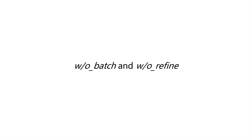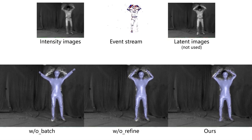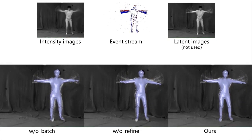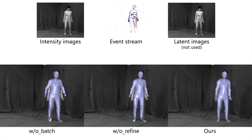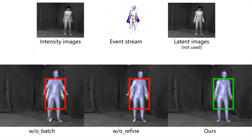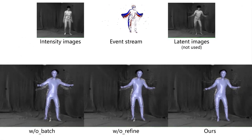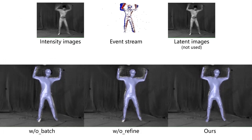In addition, we evaluate each component of our framework. We first evaluate our method without the batch optimization or the pose refinement. Note that the results of a full pipeline overlay more accurately onto the latent images. Our batch optimization significantly alleviates the drifting problem of the tracking, while the refinement stage further corrects the remaining misalignment.